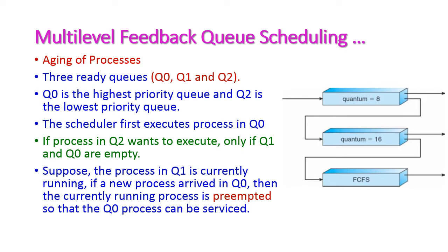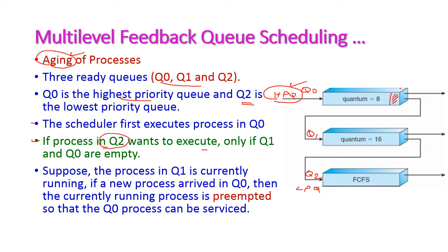Let us see a simple example of the aging process. There are three ready queues: Q0, Q1, and Q2. Q0 is the highest priority queue and Q2 is the lowest priority queue. The scheduler first executes processes in Q0. If processes in Q2 want to execute, this is only possible if both Q1 and Q0 are empty — only then will the process in Q2 get executed, because it is the least priority queue.